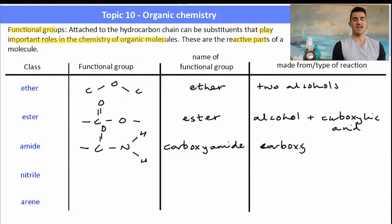And to make one of these carboxyamides, usually we have a carboxylic acid and then an amine group attached to it. So those two things will react to form a carboxyamide group.